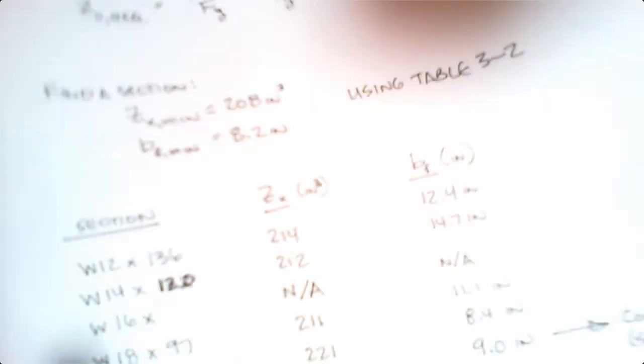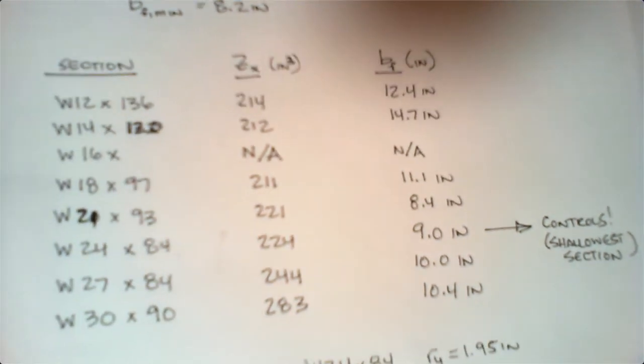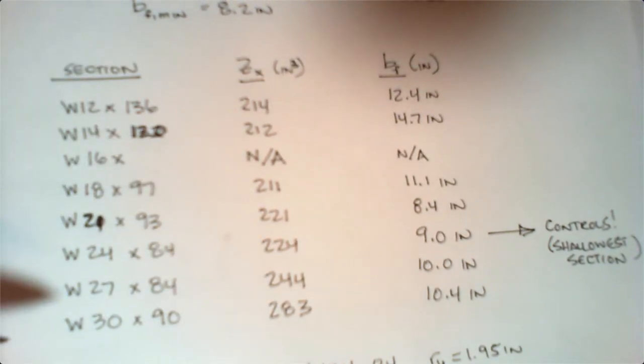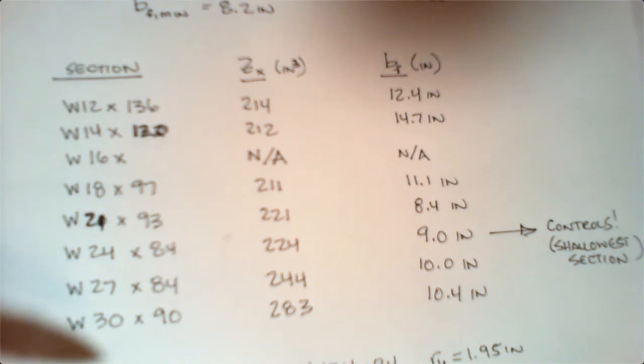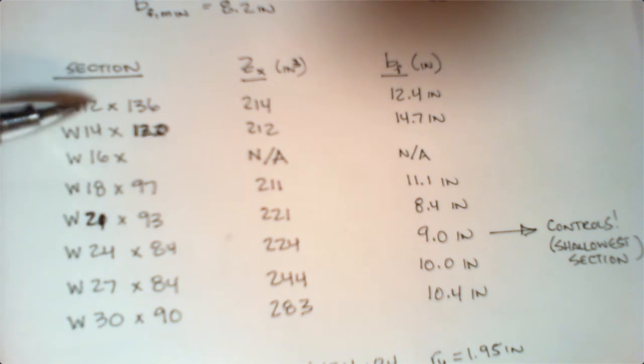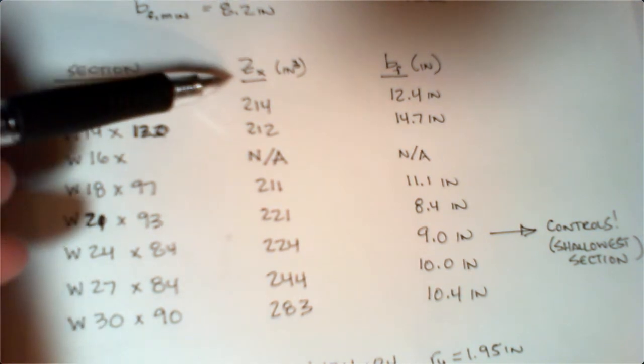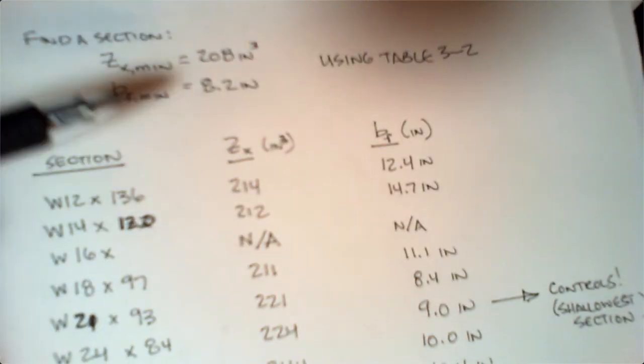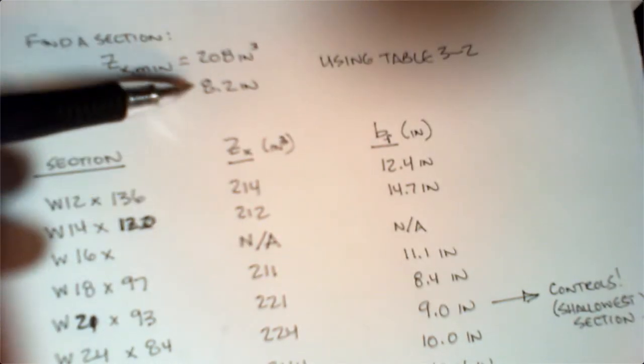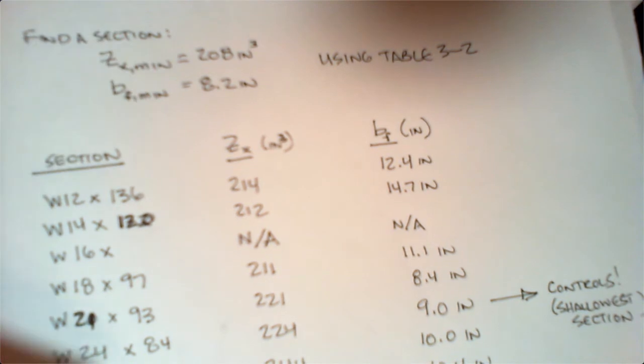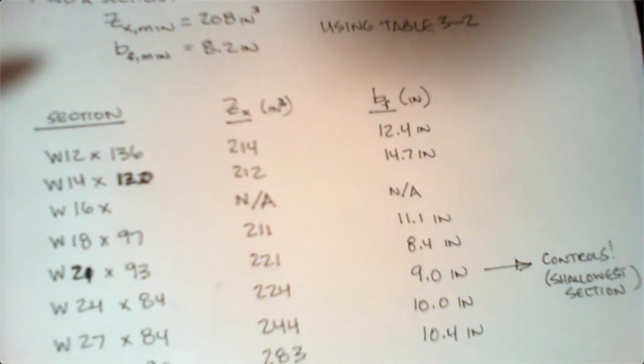I basically read through that table and picked off the values. Since I don't have any restrictions on depth—there wasn't any deflection limits listed—I'm just going to go and find all of them as an exercise. All of the shapes that matter that meet the criteria of having a Zx over 208 and a bf minimum greater than 8.2 are listed.